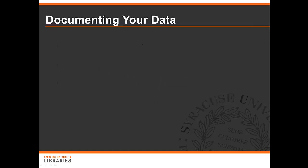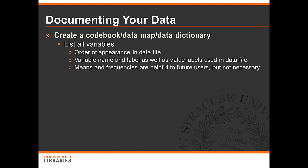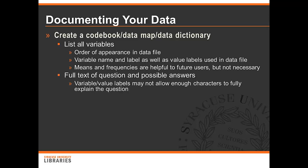Let's move on to documenting your data. As we mentioned, you'll need to create a codebook, data map, or data dictionary, which are all basically the same thing. It lists all the variables in the order they appear in the data file, all the variable names and labels, as well as all value labels used in the data file. Providing means and frequencies are helpful to future users so that they know that they've read your data correctly, but are not absolutely necessary. You should also include the full text of any questions and possible answers. Remember that variable and value labels in some software such as SAS or SPSS may not allow enough characters to fully describe the question — you wouldn't want anything to get lost in translation.